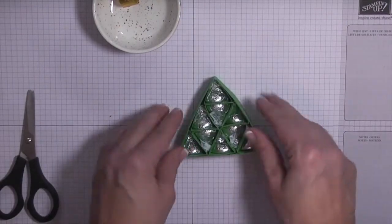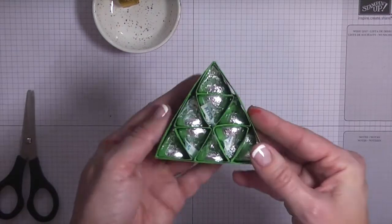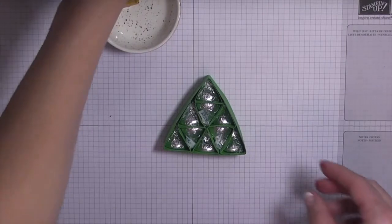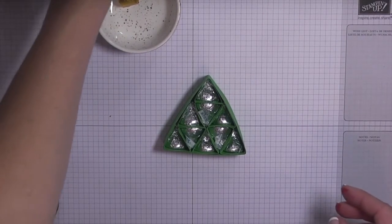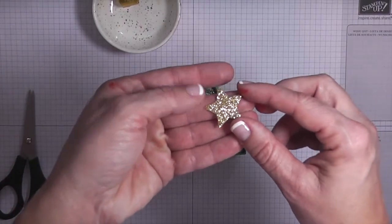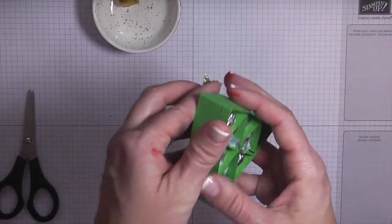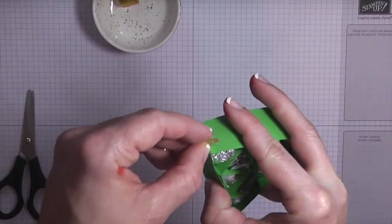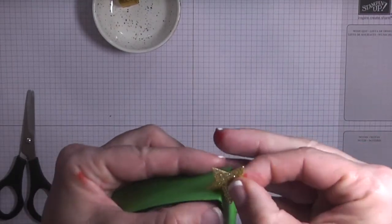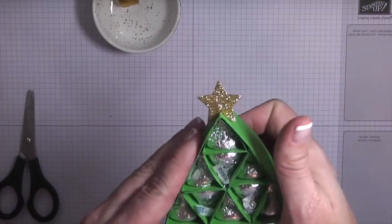Okay, so we've got our Hershey's Kisses in there. And then you can kind of reshape the little frame if it gets a little wonky. And then what I've done is I have just used our star framelits. And I've cut the smallest star out of our gold glimmer paper. And then you'll just want to, with that little notch there, you'll just slide the star into the notch. And just kind of force it down. It's pretty tight. So it shouldn't move. You shouldn't need any adhesive.